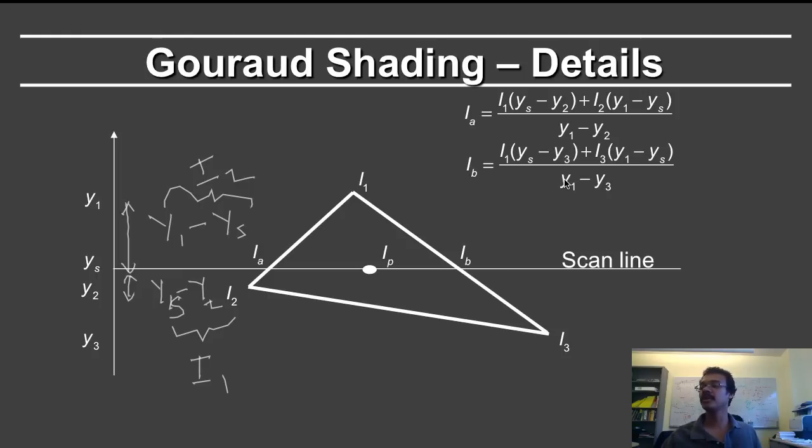We can similarly get a formula for iB, which will be equal to i1 times ys minus y3, and i3 times y1 minus ys, and now you normalize by y1 minus y3.